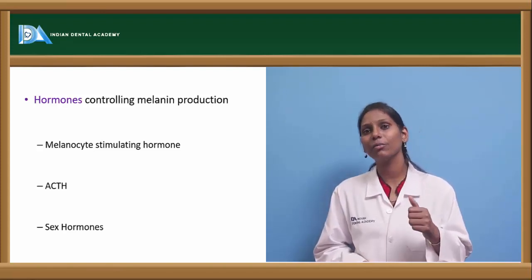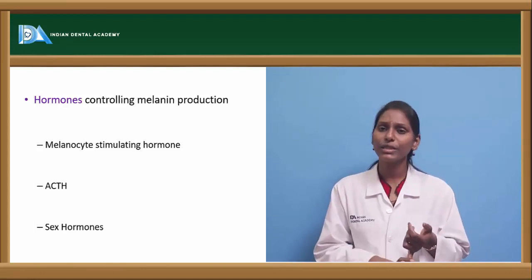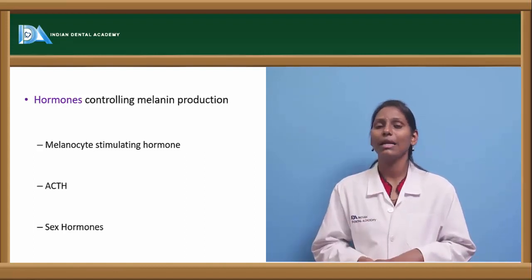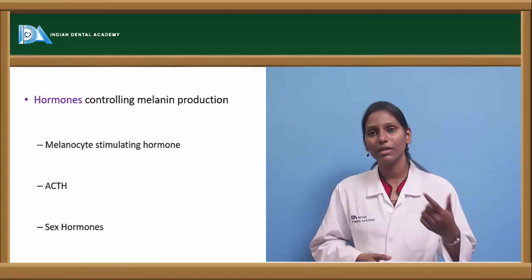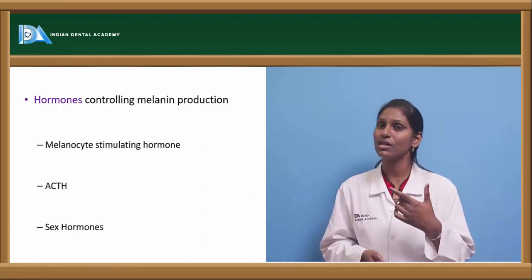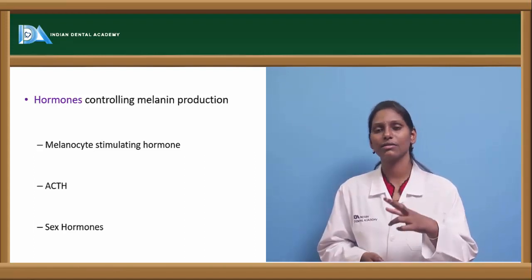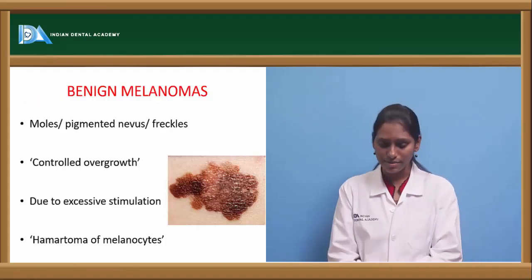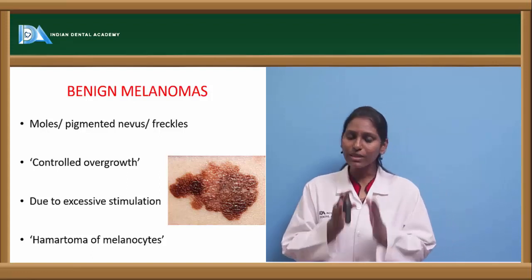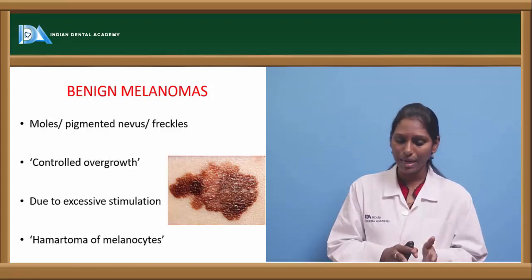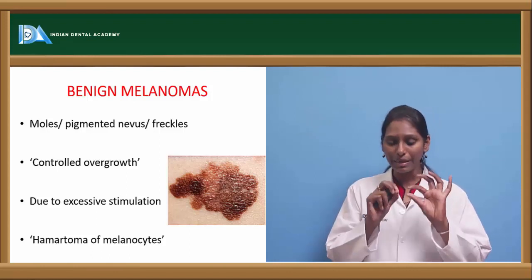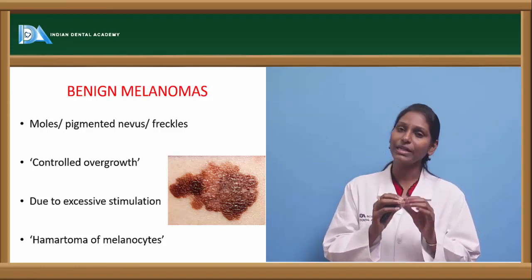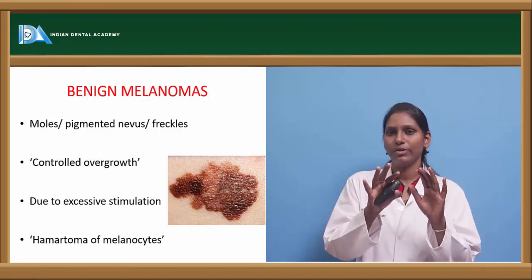The hormones controlling melanin production are melanocyte-stimulating hormone, ACTH, and sex hormones. There is a controversy linking increased estrogen — such as during pregnancy — to malignant melanoma. Malignant melanoma definitely gets worse when the patient is pregnant, and the prognosis in those cases is usually very poor. All melanomas arise from melanoblast at the dermal-epidermal junction. The melanoblast travel upward and at the upper layer become melanocytes.